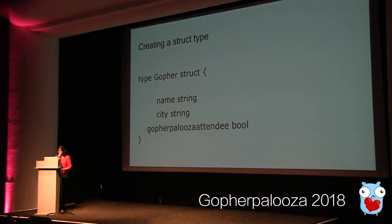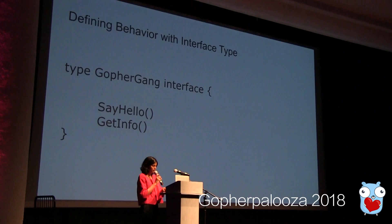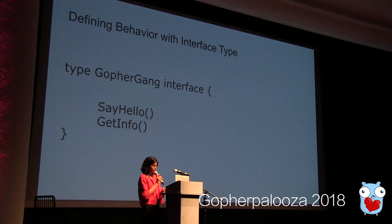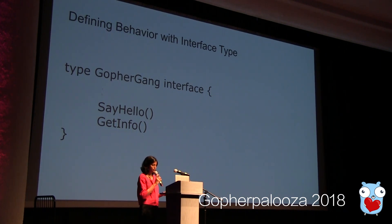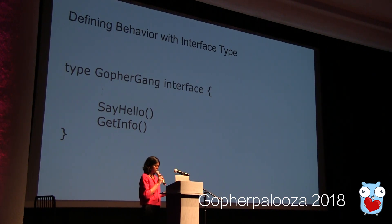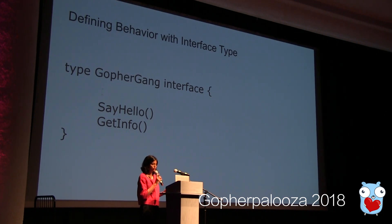Let's create a struct type. This is an example of a gopher struct. We can define a behavior with an interface type. Interface types provide contracts to concrete types, which helps us define behavior. We'll create an interface type for specifying the behavior for a gopher type. Here in this example, we've defined an interface type with the name gopher gang, in which we specify two behaviors: say hello and get info.